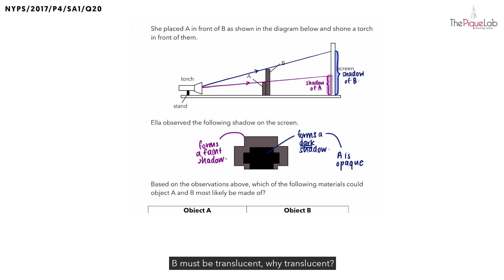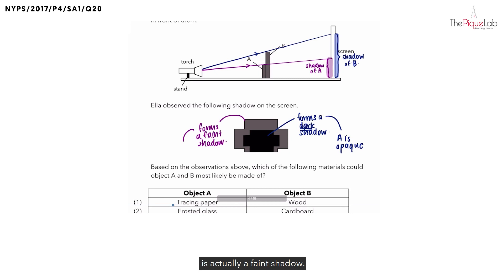Why translucent? Because translucent objects allow some light to pass through and also block some light. Since some light is blocked, what you will see on the screen is actually a faint shadow. We can conclude that B is translucent.